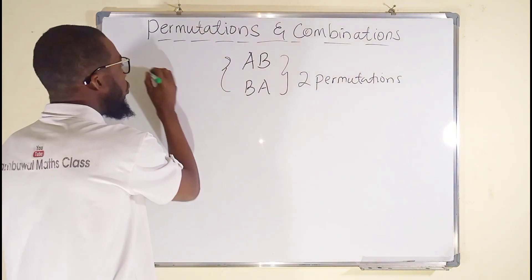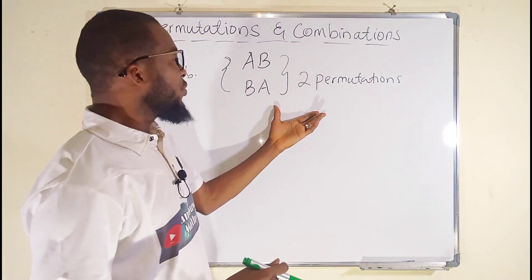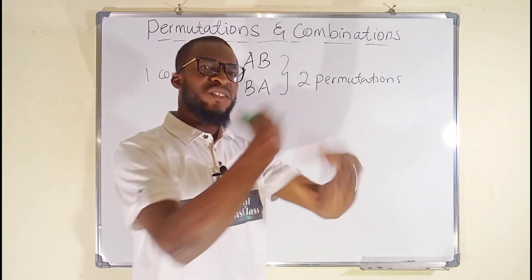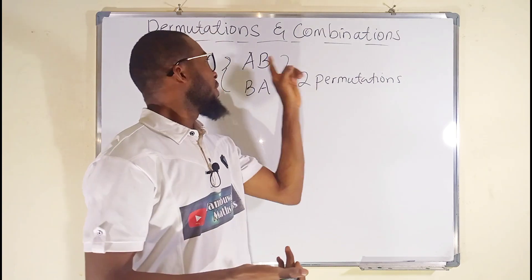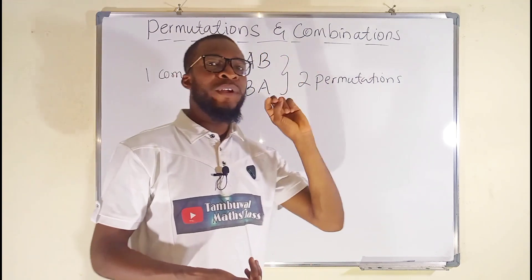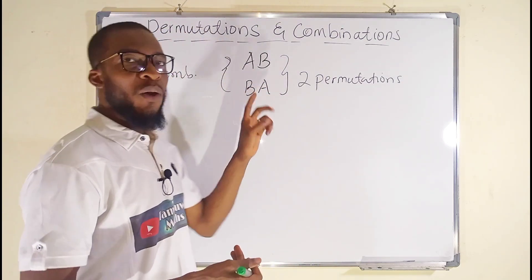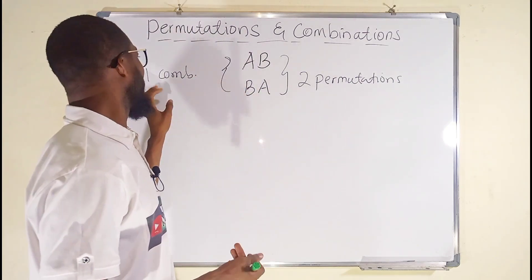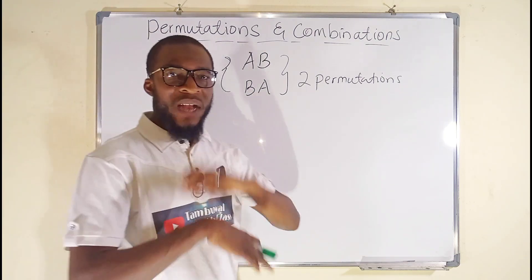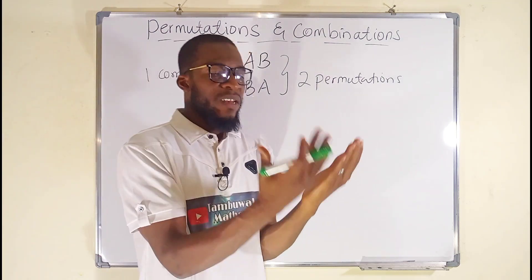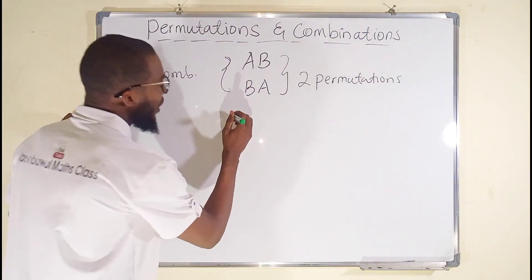But one combination. Can you see the difference between the two? Permutation is concerned with arrangement, where order does matter. AB and BA are two different arrangements in permutation. But since AB and BA are all letters A and B, they are considered as one combination. In combination, order doesn't matter — no matter how you arrange them, if they are the same letters, they are considered as one.